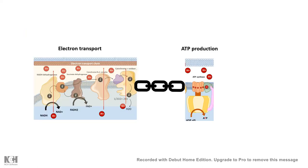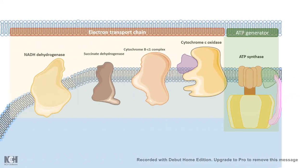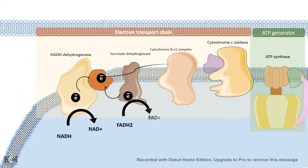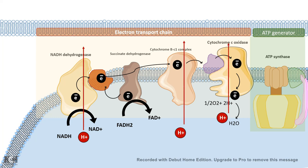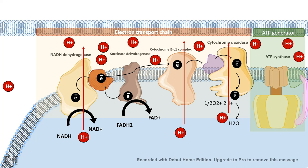The electron transport chain is coupled with ATP production because it creates a gradient of hydrogen. In the electron transport chain, NADH and FADH2 are oxidized and electrons are transferred via several complexes, ultimately reducing oxygen to produce water. Coupled with this process, protons are pumped into the mitochondrial intermembrane space, creating a proton gradient, which ATP synthase uses to form ATP.